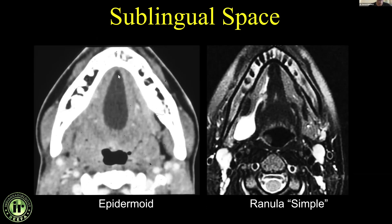When talking about cystic fluid collections in the sublingual space: if it's anterior and midline, this is a classic epidermoid. If the cystic lesion is off midline — lateral to the hyoglossus muscle, medial to the mylohyoid muscle, and in close proximity to the sublingual gland — it's a ranula, which is basically a congenital obstruction of the sublingual gland. If anterior and midline: epidermoid; if lateral: ranula. The other cystic lesion we discussed was at the tongue base at the foramen cecum, which would be a thyroglossal duct cyst.